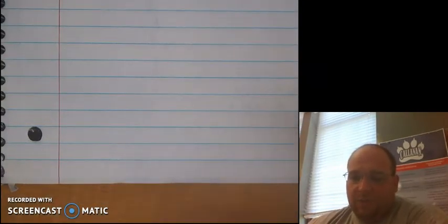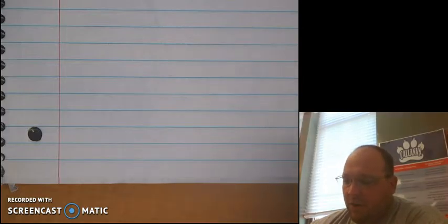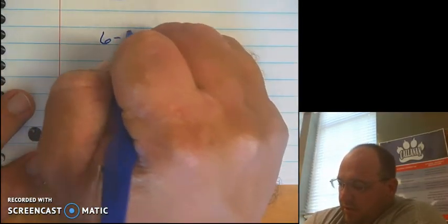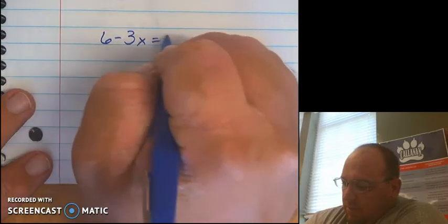All right, we're at our last example. And this is one that typically will throw kids off, especially when they're trying to solve it. Our problem is going to be 6 minus 3x equals 21.